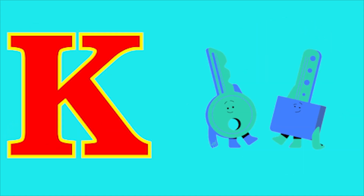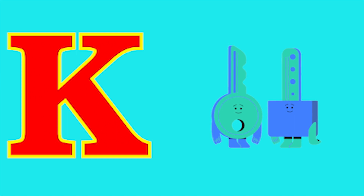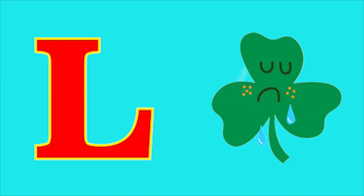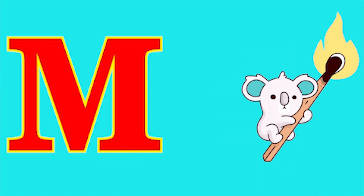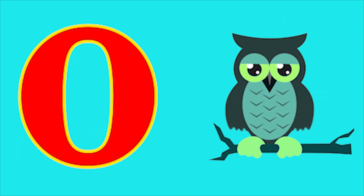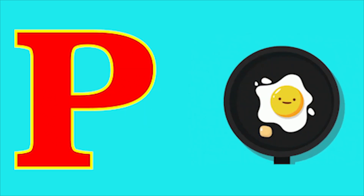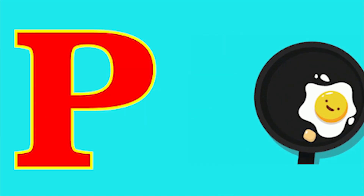K for keet, L for leaf, M for magic, N for nose, O for owl, B for pan.